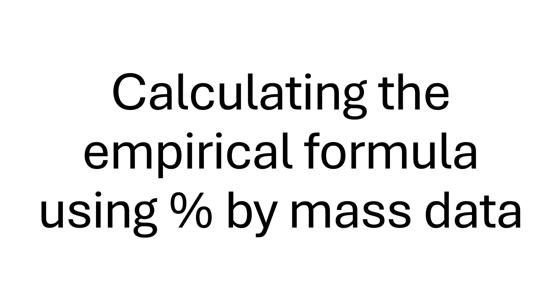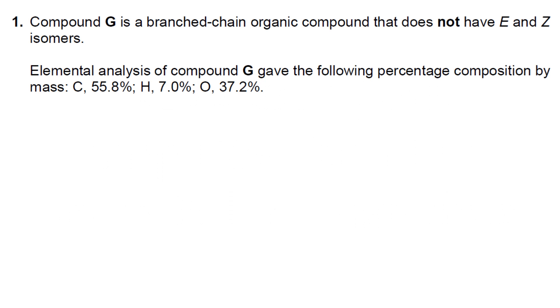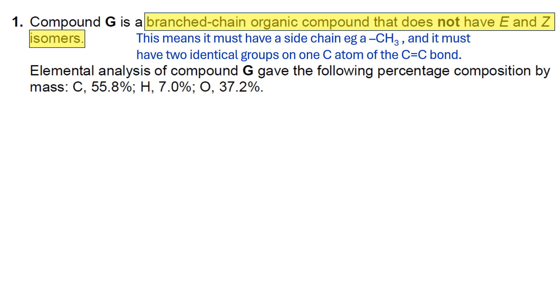We'll start by taking the percentage by mass data and using it to calculate the empirical formula. It tells you it's a branched-chain organic compound that doesn't have E and Z isomers. The E and Z isomers suggest it has a carbon-carbon double bond, but it must have two identical groups on one carbon atom of the C-C double bond in order for E and Z isomers to not actually work for that structure. If it's a branched-chain it must have a side-chain of some kind, for example, a methyl group.